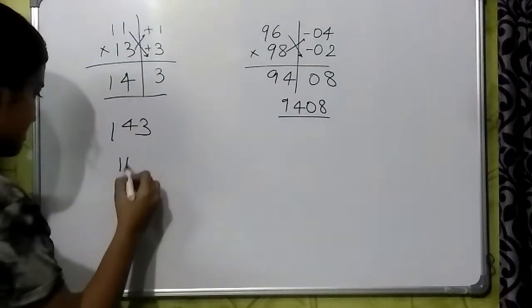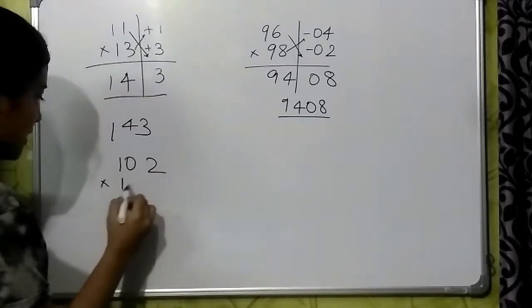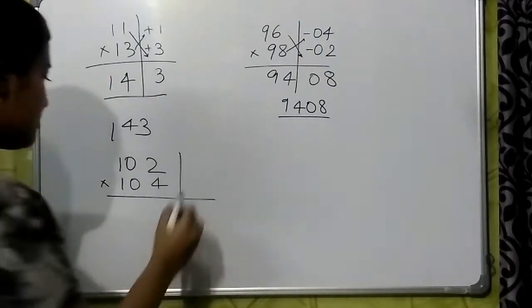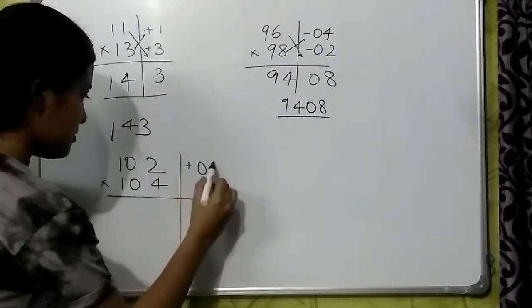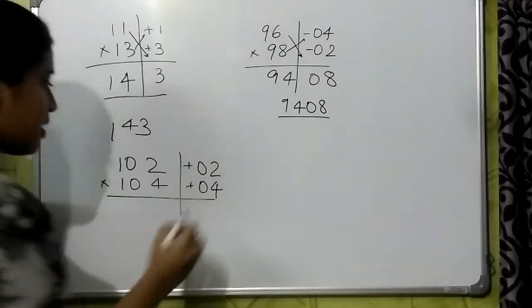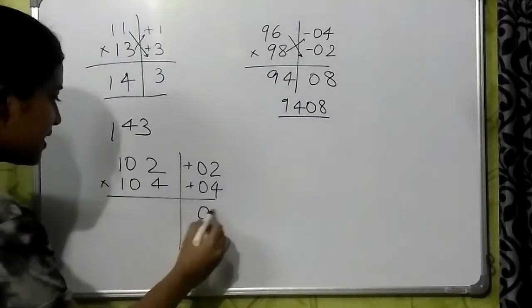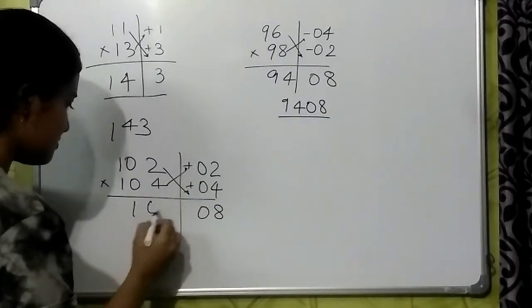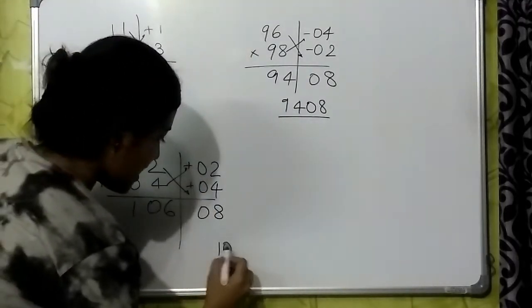Let us take some other numbers. 102 into 104. How much do they differ from 100? 2 and 4. Multiply these numbers and cross addition. This is the answer.